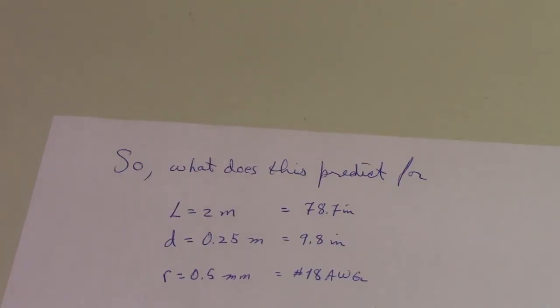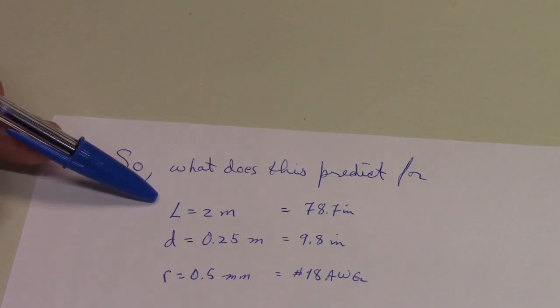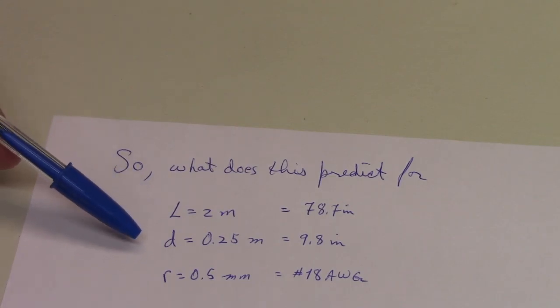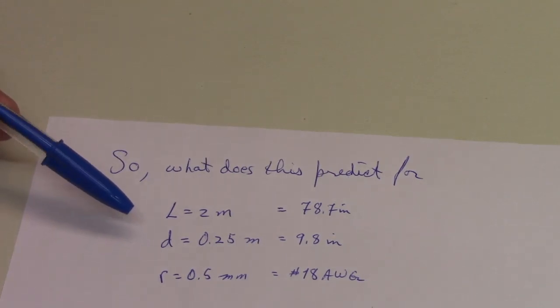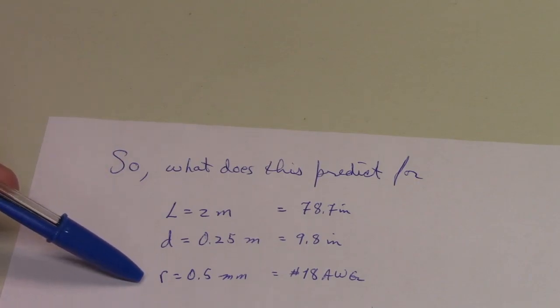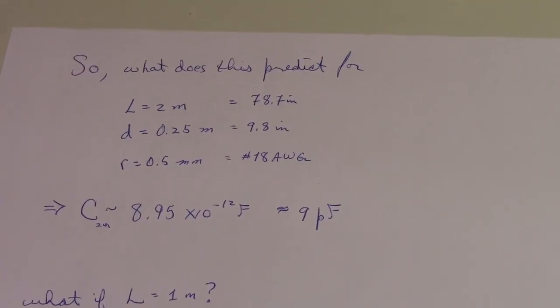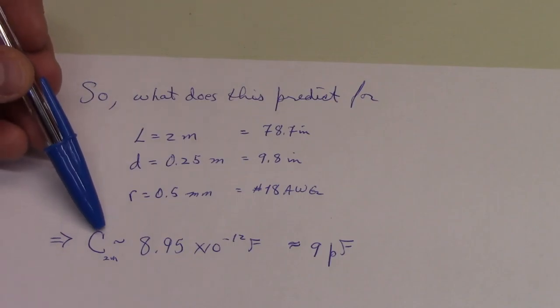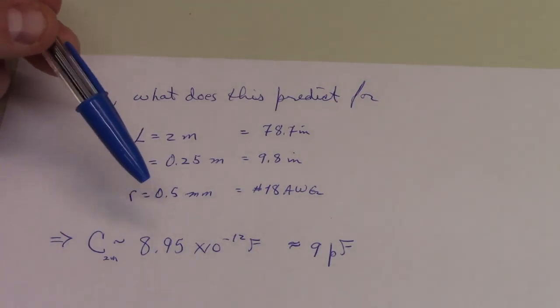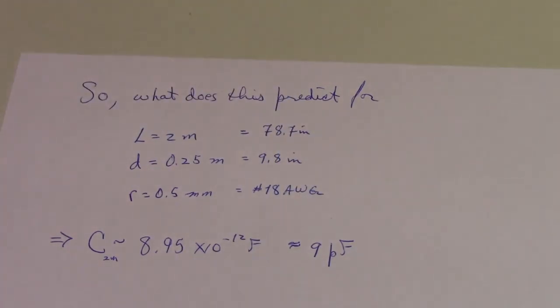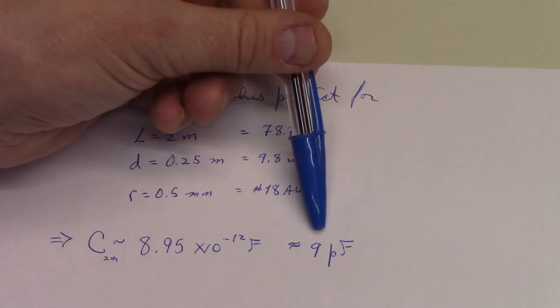Lots of math, but let's reduce it to numbers and see what it predicts. Let's take two meters of wire like we had in the beginning. Suppose the distance between them is a quarter of a meter, and we're using 18 gauge wire which has a diameter of one millimeter, or a radius of 0.5 millimeters. When you plug that in, the capacitance for two meters of parallel wire equals about 9 picofarad.